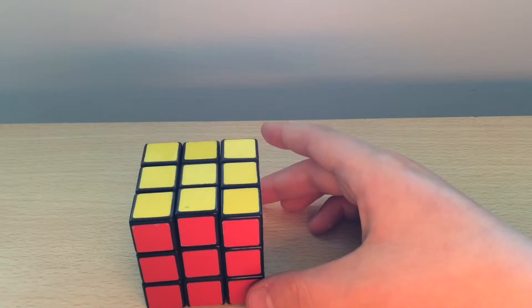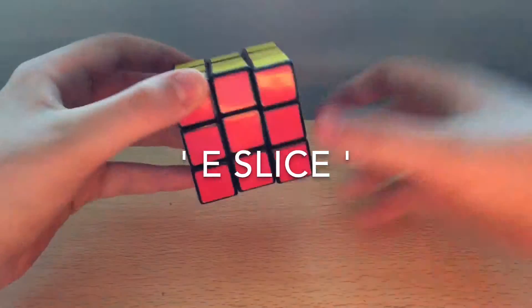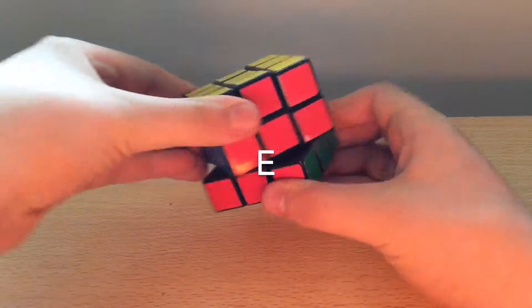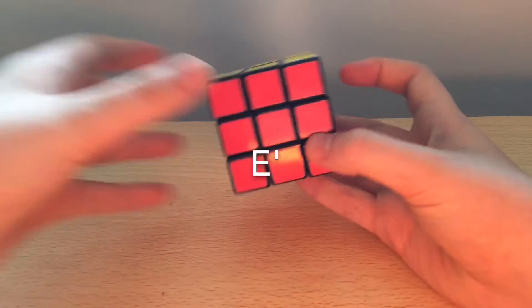Second of all, we're going to have E. Now E is the equatorial slice, so it goes around the equator. An E move looks like this, and an E dash move looks like this.